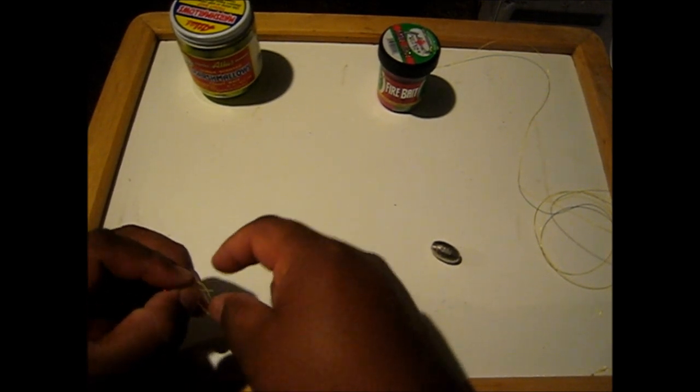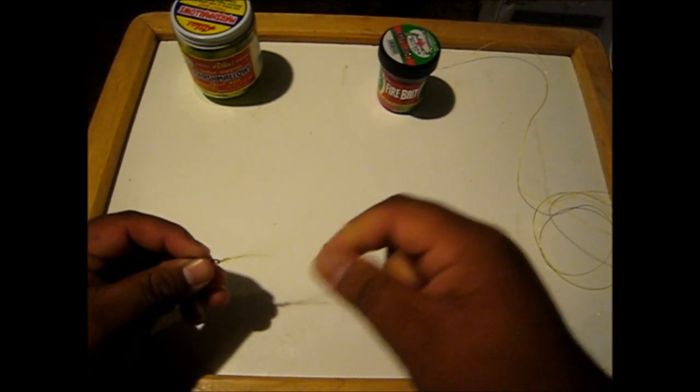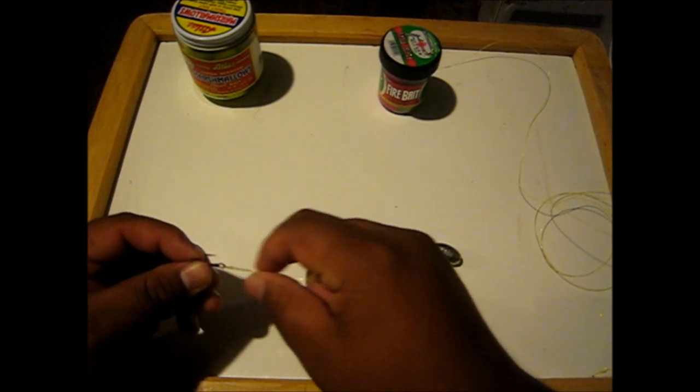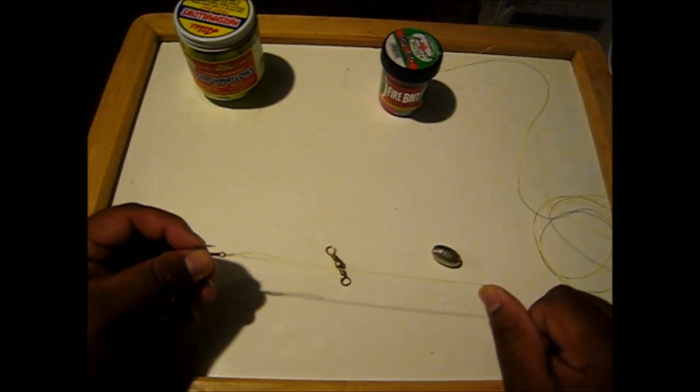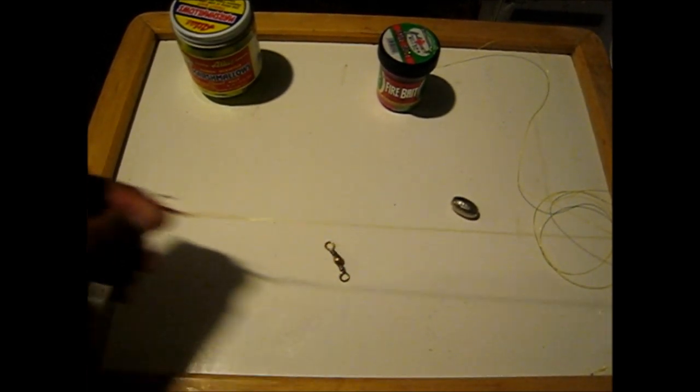And it normally helps to wet your line when making knots to prevent the line from catching itself and making it a little bit less durable. So there's my leader line right there with the hook.